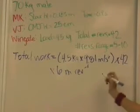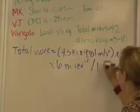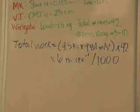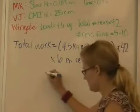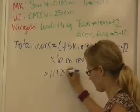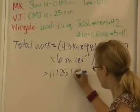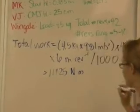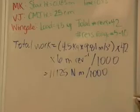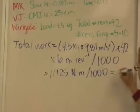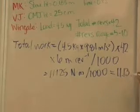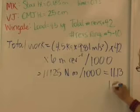And then divided by 1,000 and we end up getting 11,125 newton meters divided by the 1,000, which ends up being 11.125 newton meters. This is going to be kilojoules.